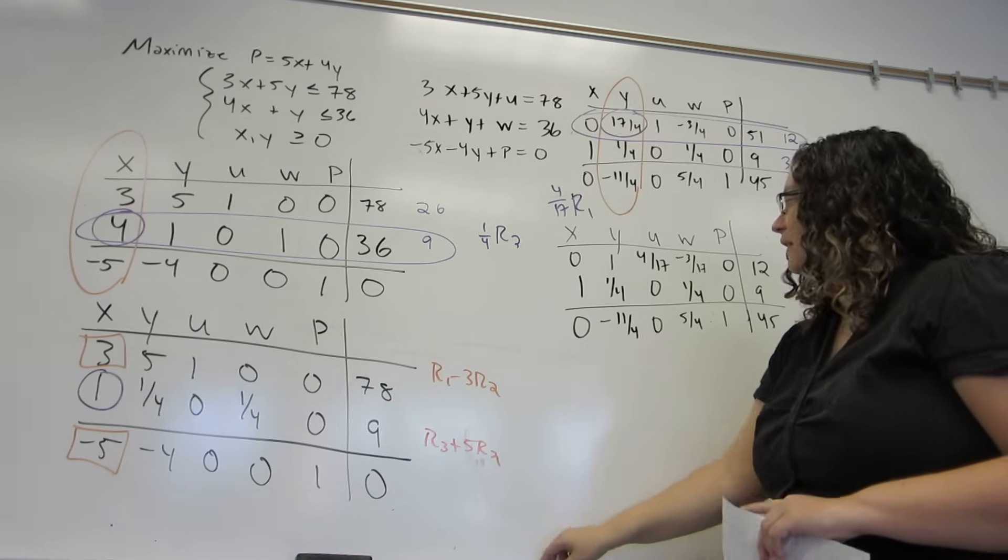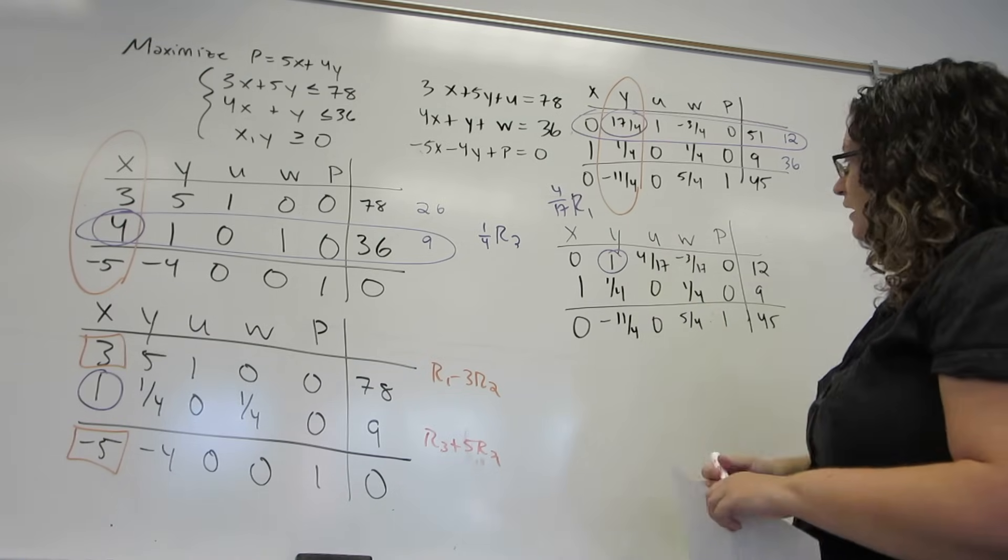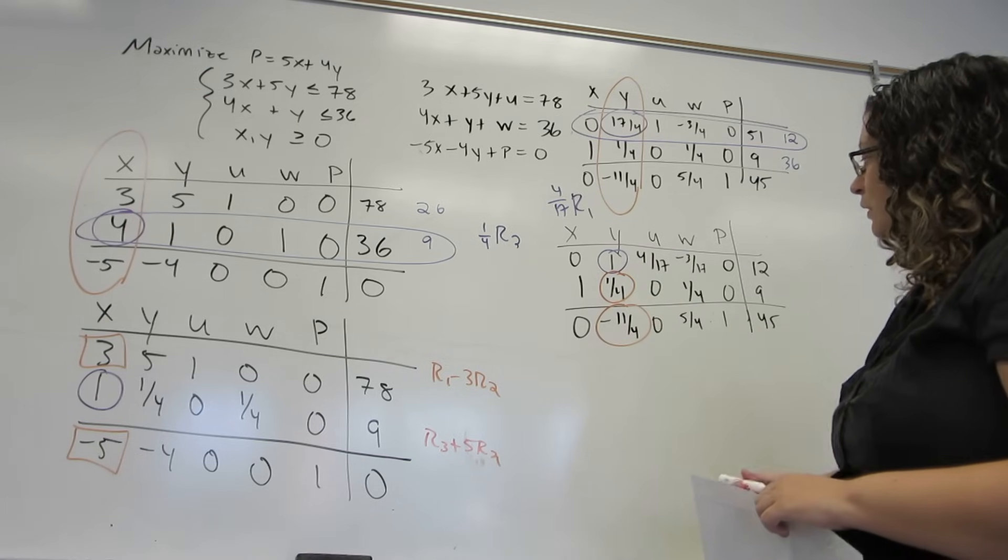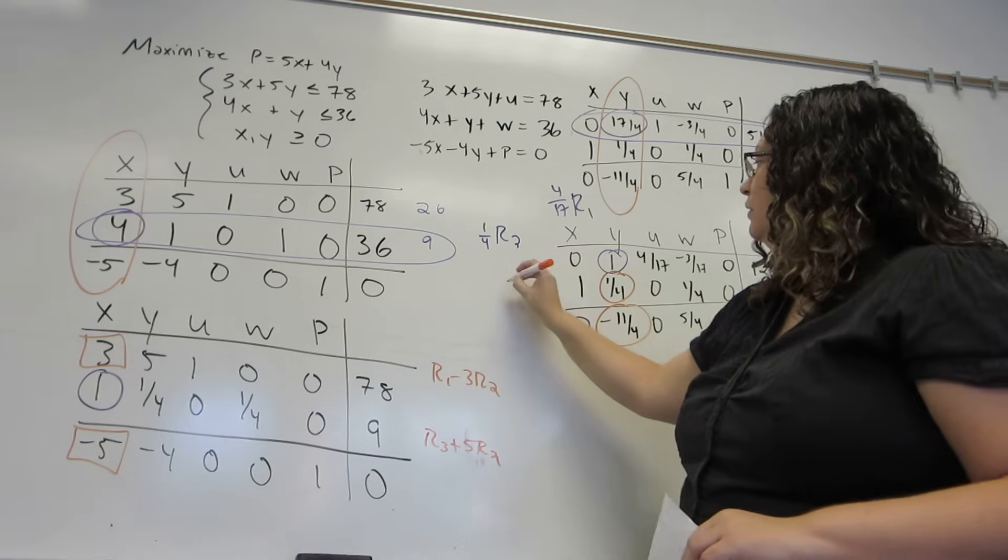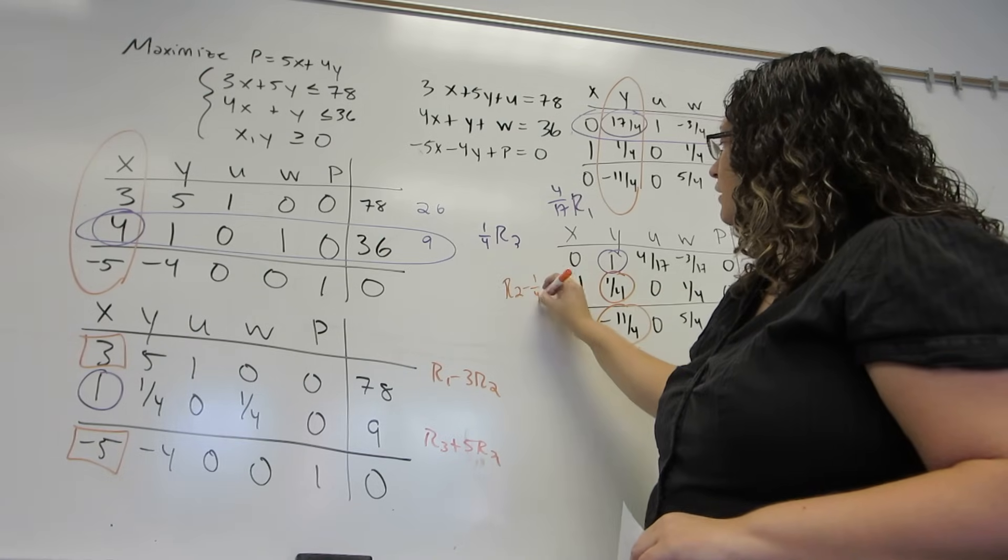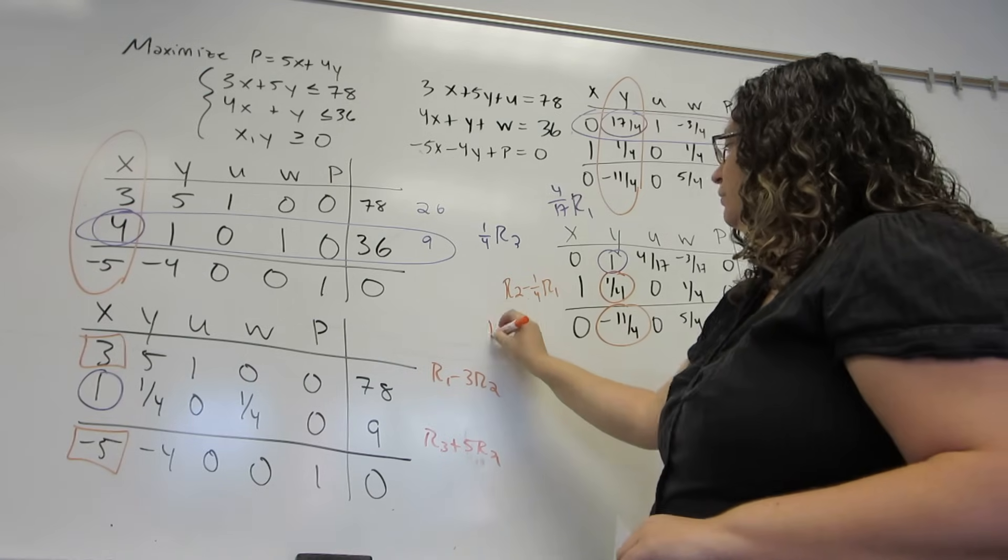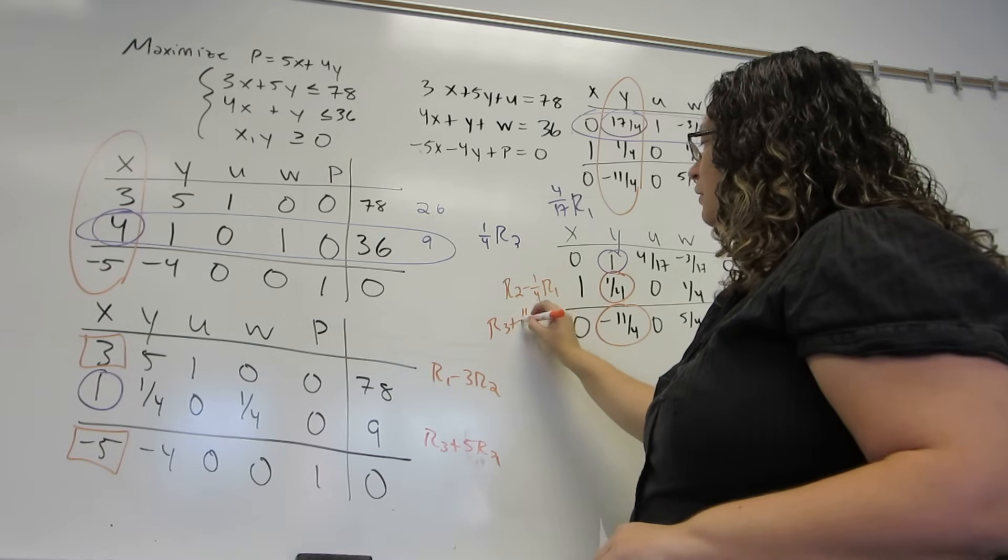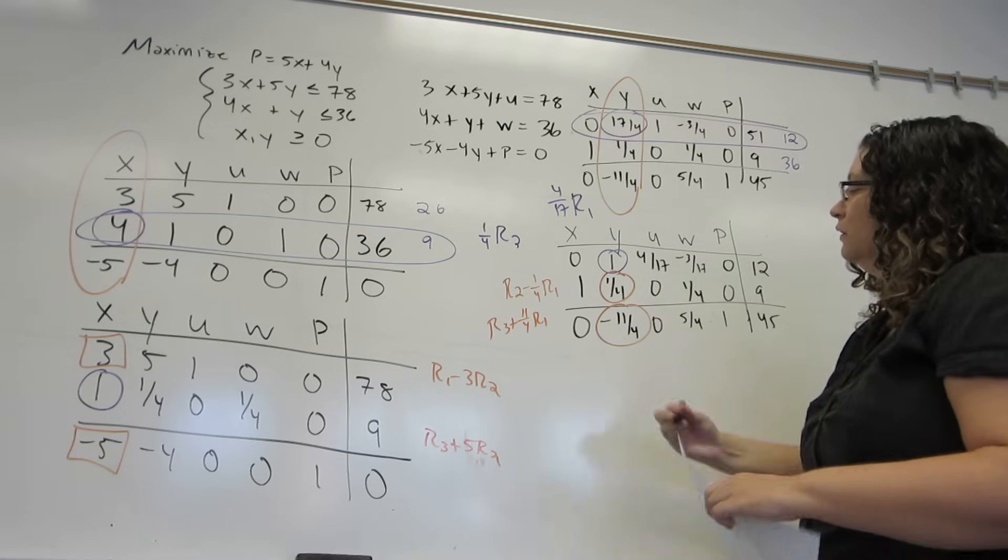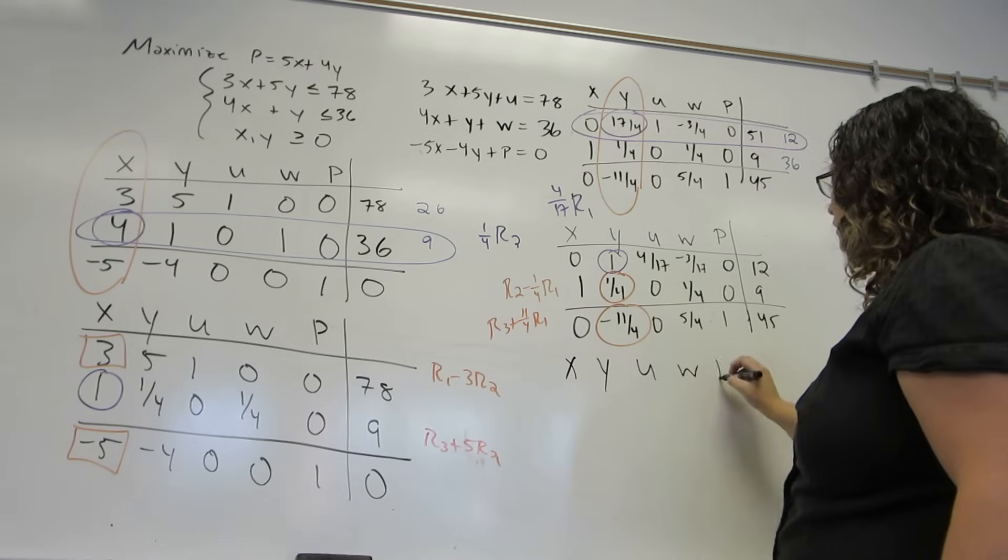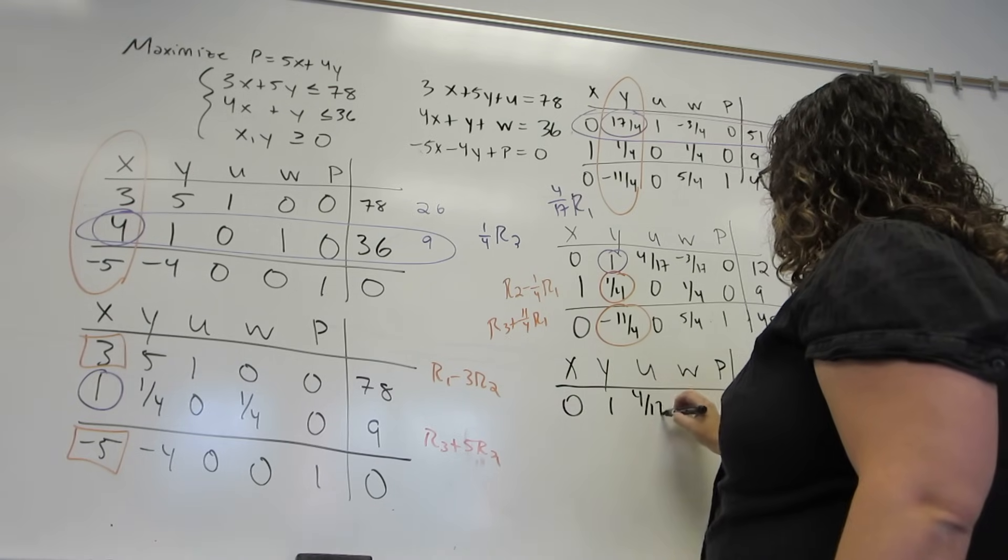Now, for my last step, this is still my pivot element. And now, I need to get 0's everywhere else in the column. So I need those to be 0's. To make this 1 fourth a 0, I'm going to do r2 minus 1 fourth r1. To make the negative 11 fourths 0, I'm going to do r3 plus 11 fourths r1. First row is not going to change.